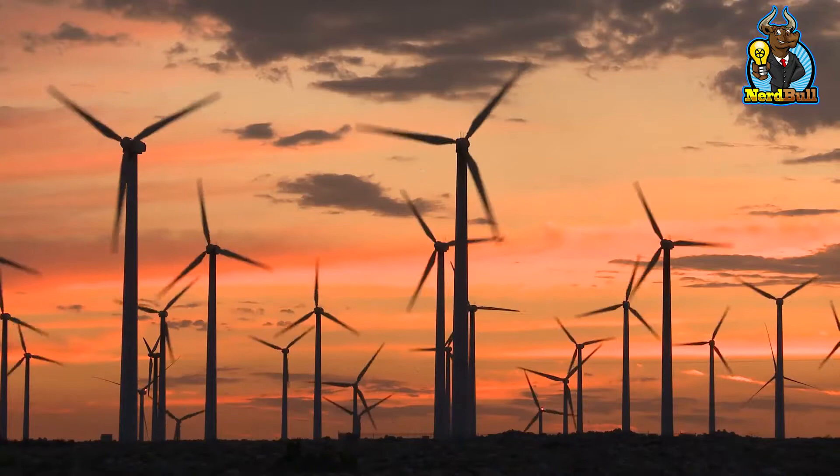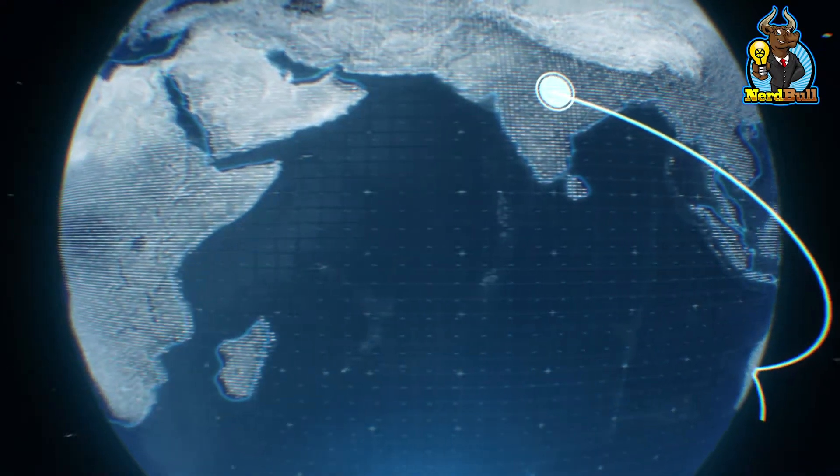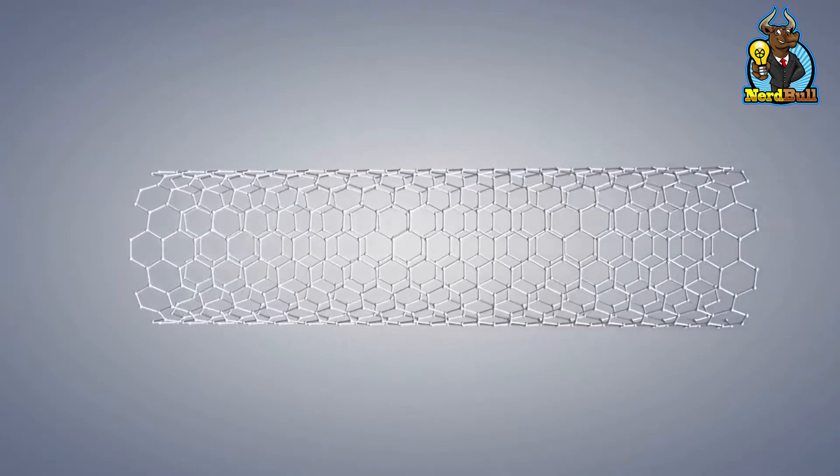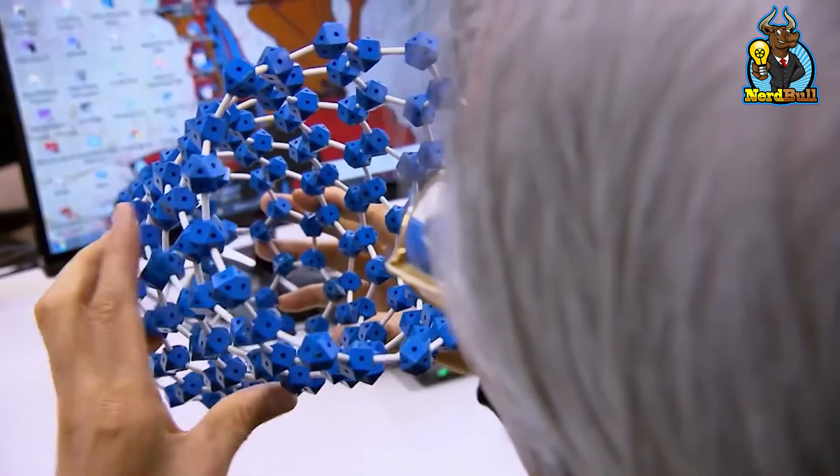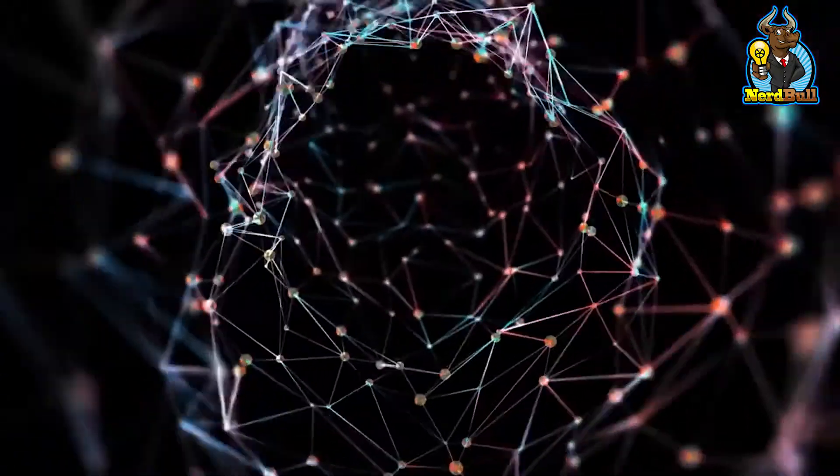Renewable energies are increasing rapidly, but not rapidly enough to satisfy global demands, stemming in an intense upswing in the use of coal, which risks pushing carbon dioxide emissions to record highs. Here's how carbon nanotubes are changing renewable energy.